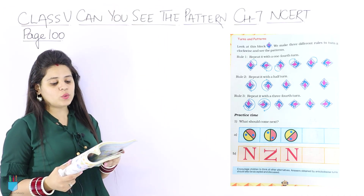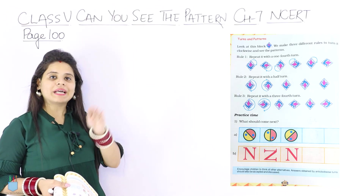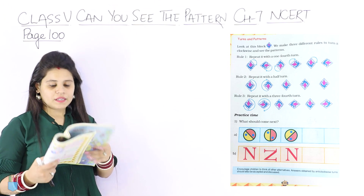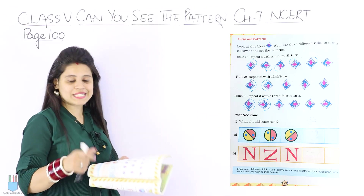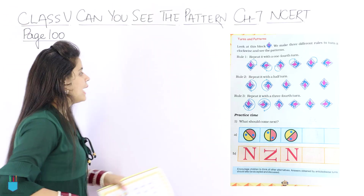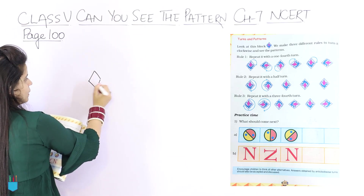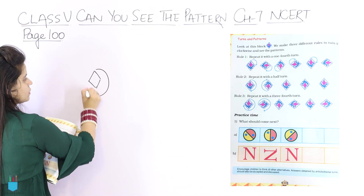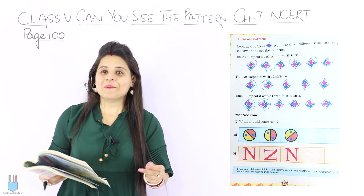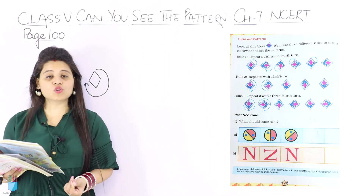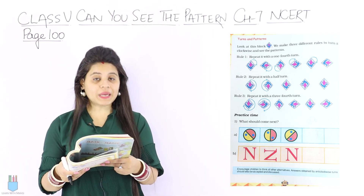Then the third one is: repeat it with a three-fourth turn. You can see it with a three-fourth turn. Now, question number 1 is: what should come next? So we have a pattern and turns.